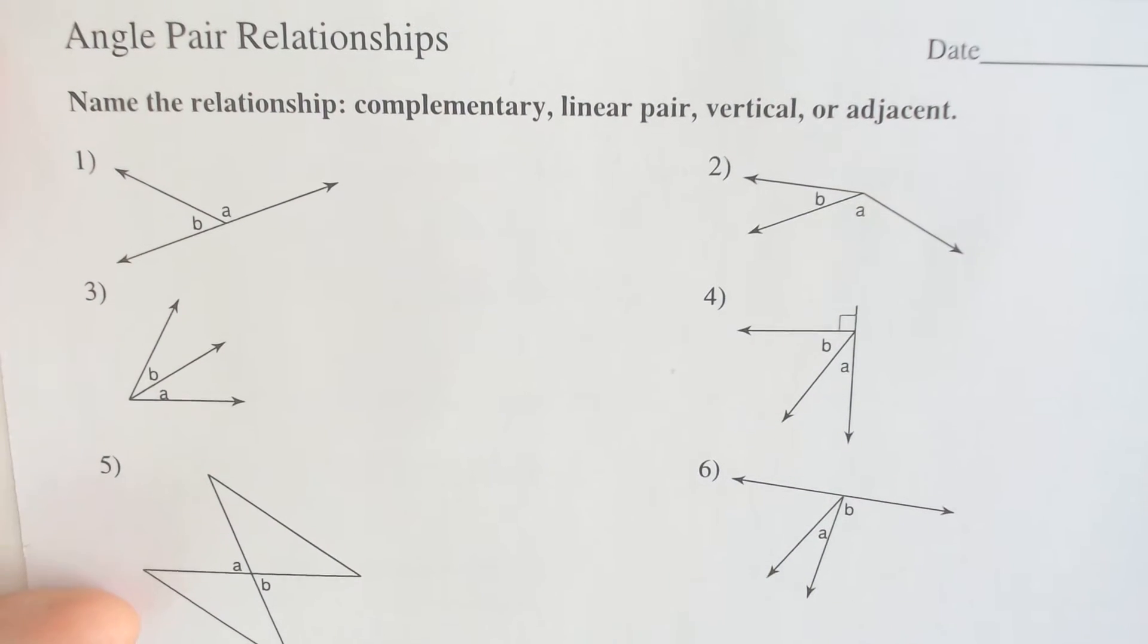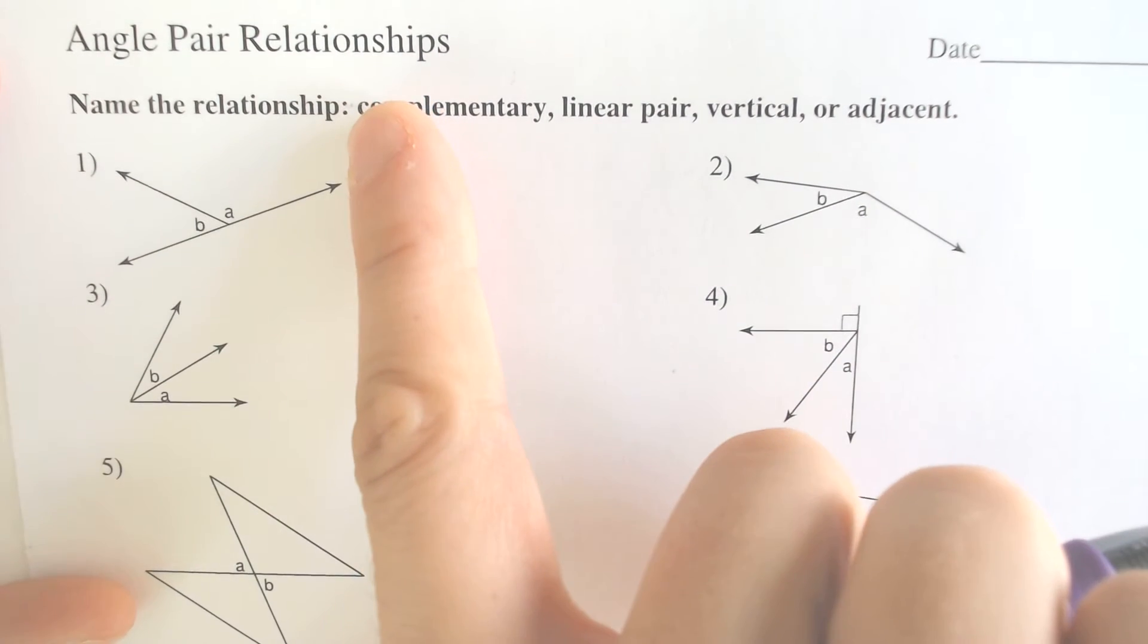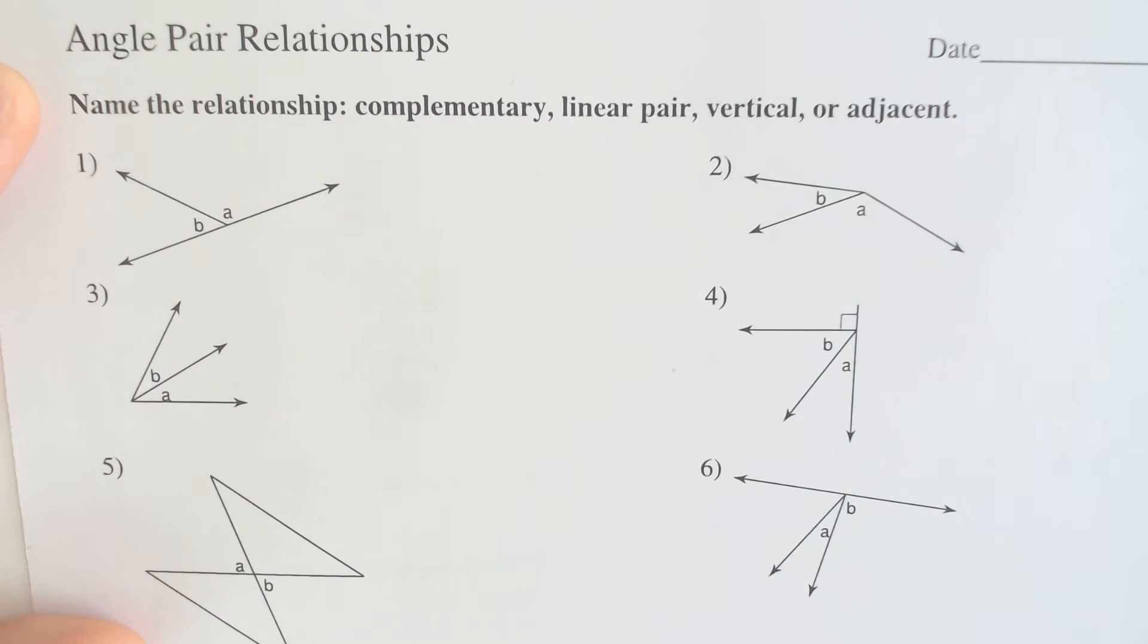Hello and welcome back to another episode of Math with Sohn. Today we're going to be doing some angle pair relationships and also using them to solve for a missing angle.